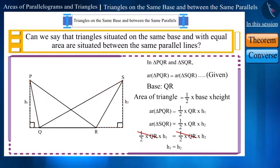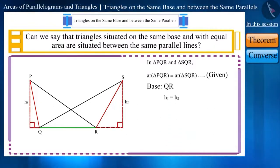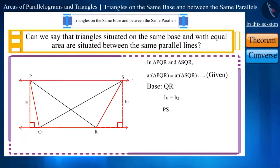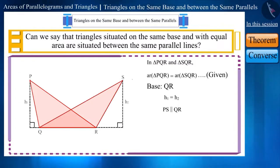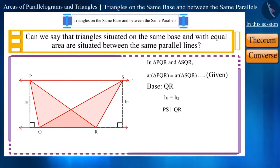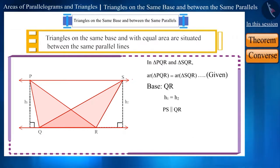This means the heights of triangles PQR and SQR are the same, and vertices P and S will be equidistant from side QR. If we join P and S by drawing a line, then we can say that PS and QR are parallel to each other. Therefore, triangle PQR and triangle SQR are situated between the same parallel lines. Thus, we have proved the inverse of the theorem, which says: triangles situated on the same base and with equal area are situated between the same parallel lines.